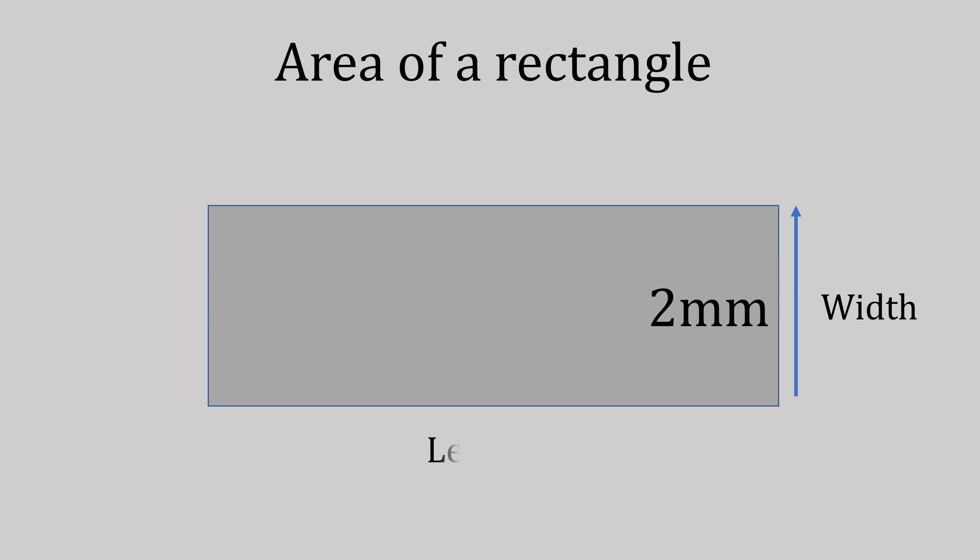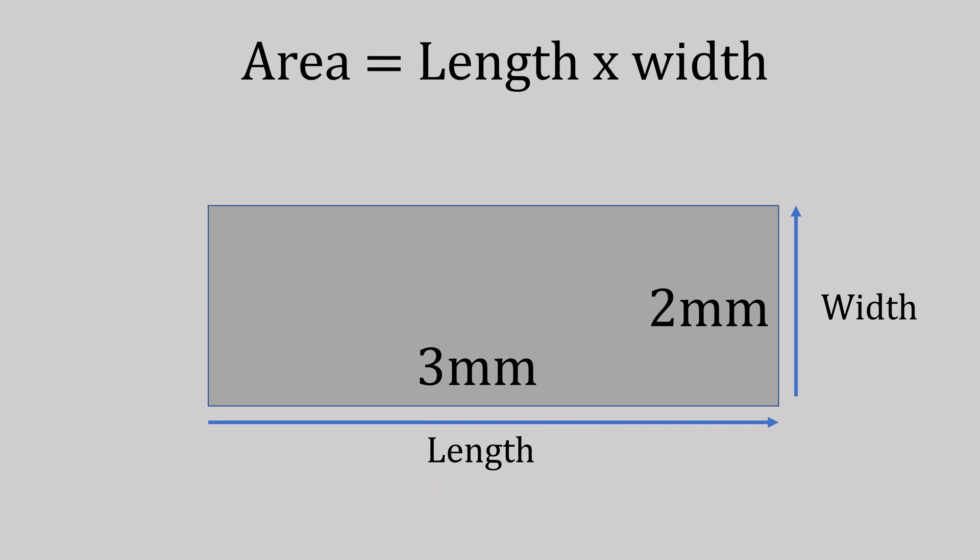The length is the longer side, and to find the area we times the length by the width. So here we have 3 millimeters times 2 millimeters, which equals 6 millimeters, and then we use the square sign to show this is area squared.